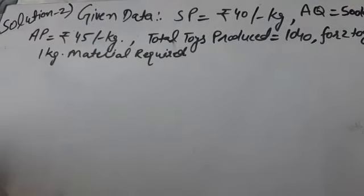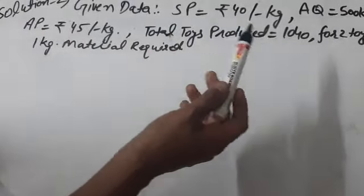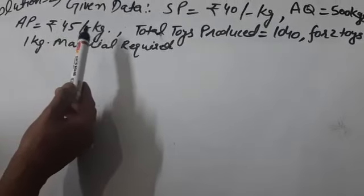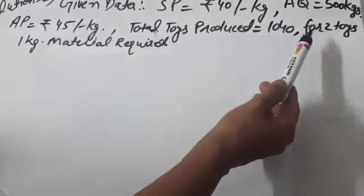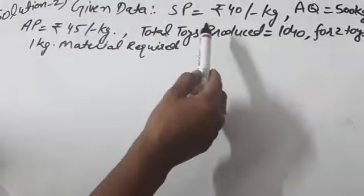As per question number two, given data is standard price Rs. 40 per kg, actual quantity 500 kilograms, actual price Rs. 45 per kg, total toys produced 1040, and for two toys one kilogram material is required. By the help of this data we can calculate standard quantity.